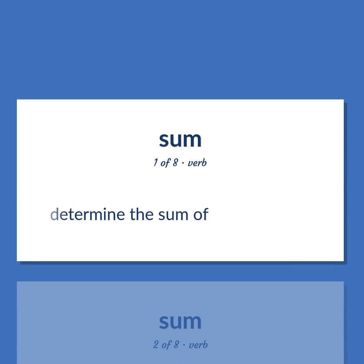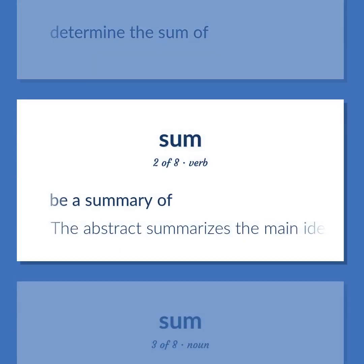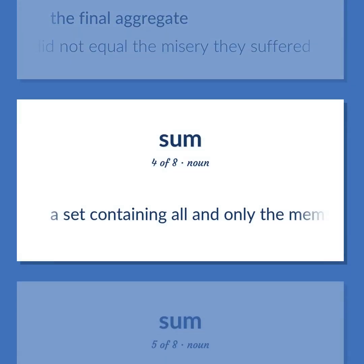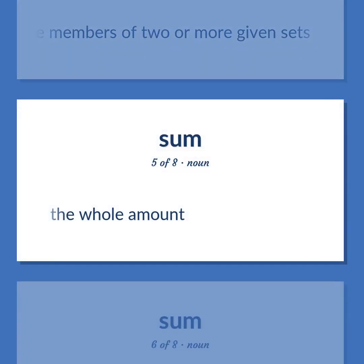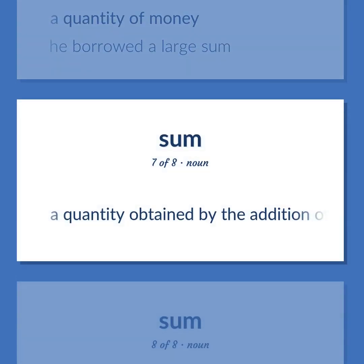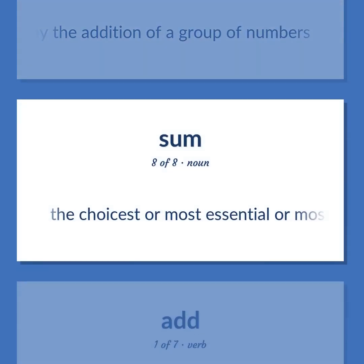Sum: Determine the sum of. Be a summary of. The abstract summarizes the main ideas in the paper. The final aggregate. The sum of all our troubles did not equal the misery they suffered. A set containing all and only the members of two or more given sets. The whole amount. A quantity of money — he borrowed a large sum. A quantity obtained by the addition of a group of numbers. The choicest or most essential or most vital part of some idea or experience.